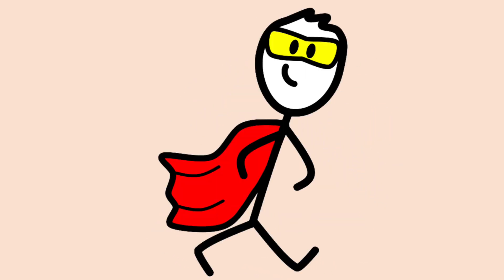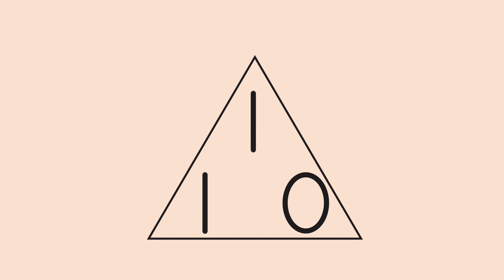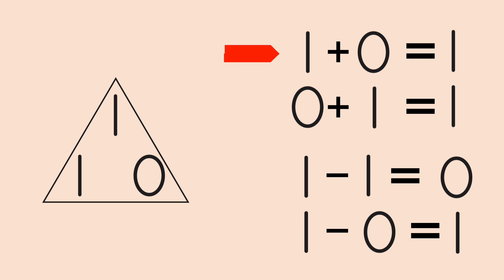He tried another fact family: one, one, and zero. He set up the fact family triangle like this, and he was able to find four number sentences. One plus zero equals one. Zero plus one equals one. One minus one equals zero. And one minus zero equals one.